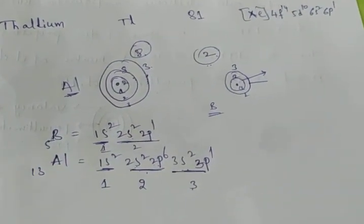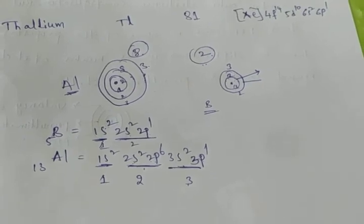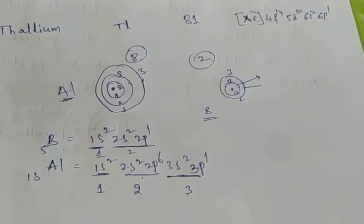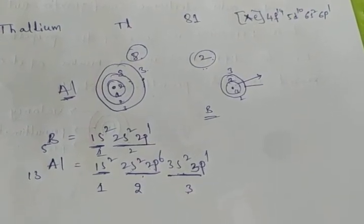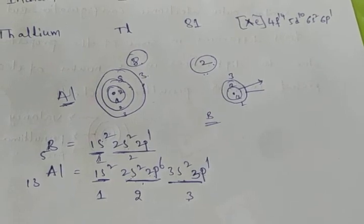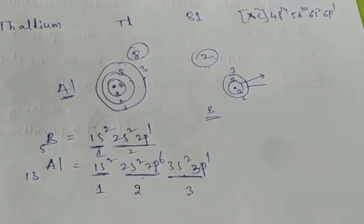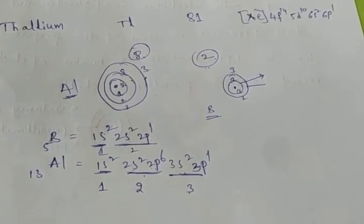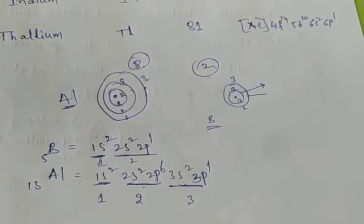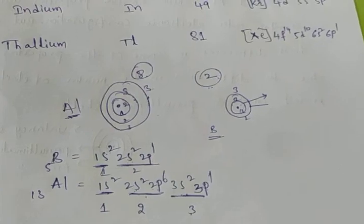This covers the electronic configurations of the 13th group elements. In the next class, we will discuss their occurrence and how these elements can be obtained.